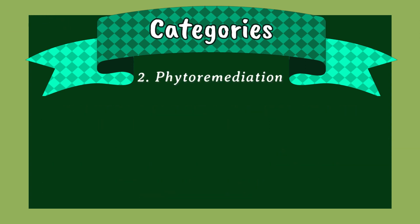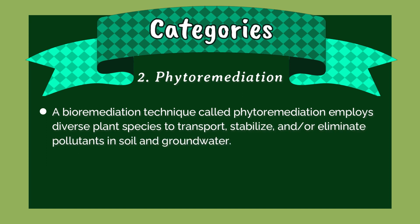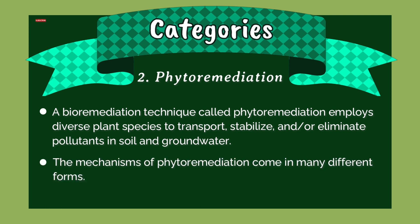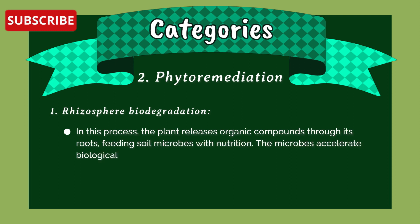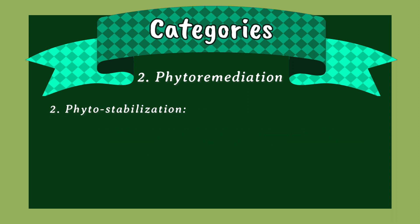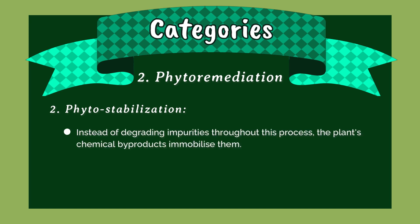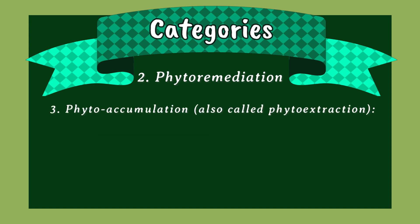The second category is phytoremediation — a bioremediation technique that employs diverse plant species to transport, stabilize, and/or eliminate pollutants in soil and groundwater. The mechanisms include: (1) Rhizosphere biodegradation, where the plant releases organic compounds through its roots, feeding soil microbes that accelerate biological decay. (2) Phytostabilization, where the plant's chemical byproducts immobilize impurities rather than degrade them.